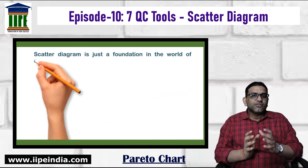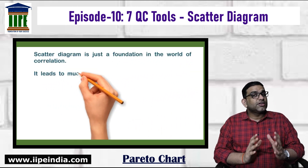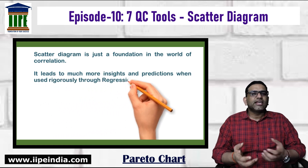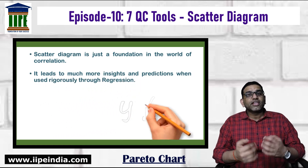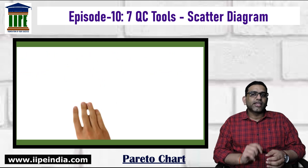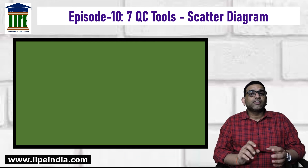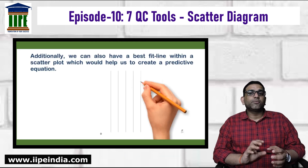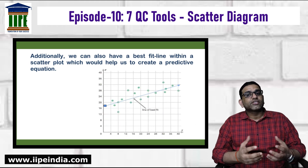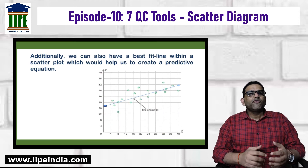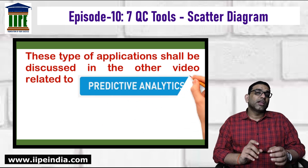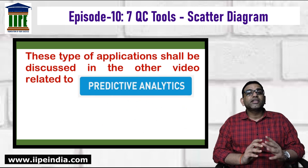Scatter diagram is just a foundation in the world of correlation. It leads to much more insights and predictions when used rigorously through regression. Additionally, we can also have a best fit line within a scatter plot, which would help us create a predictive equation. These types of applications shall be discussed in another video related to predictive analytics.